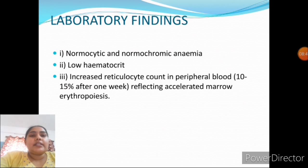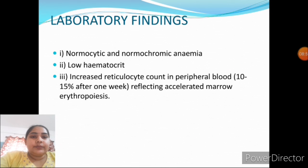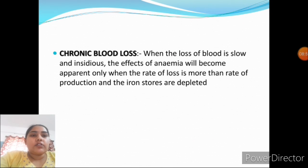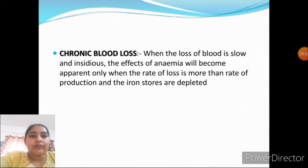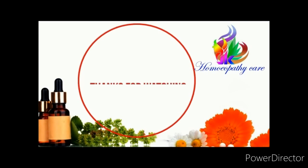Laboratory findings in acute blood loss include normocytic normochromic anemia, low hematocrit, and increased reticulocyte count in peripheral blood. In chronic blood loss, when the loss of blood is slow and insidious, the effects of anemia become apparent only when the rate of loss exceeds the rate of production and iron stores are depleted. Thank you so much for watching my video.